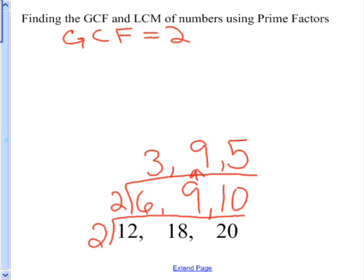Now, looking at 3, 9, and 5, is there any number that will go into 3, 9, and 5? No, but 3 will go into 3 one time. 3 will go into 9 three times, and since 3 won't go into 5, we bring that up.